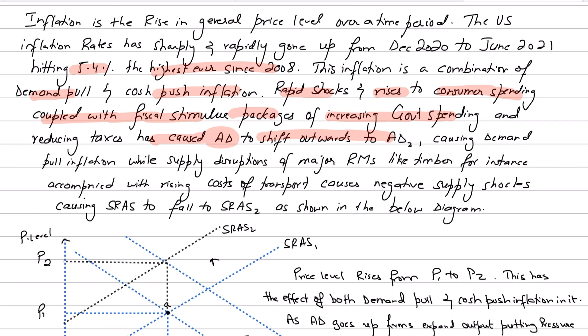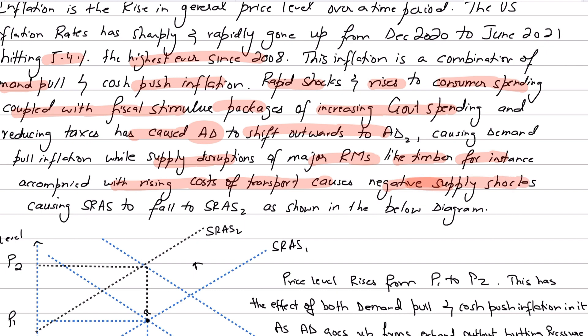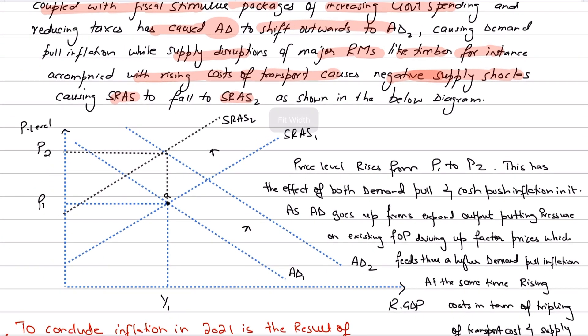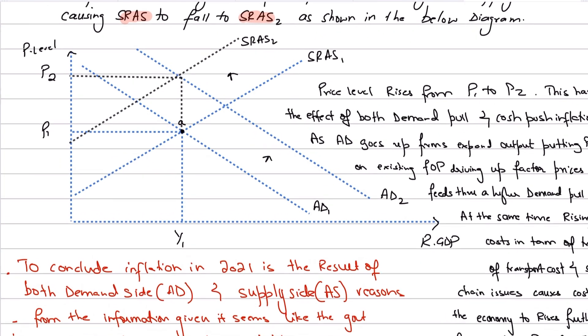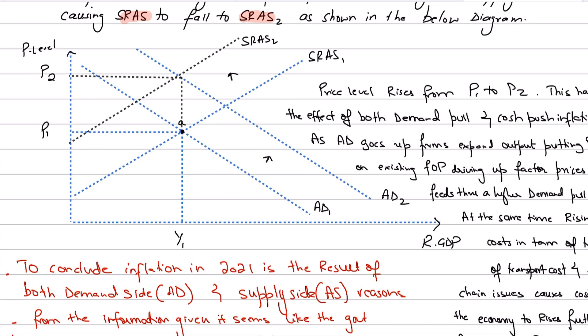At the same time, mention supply-side reasons such as supply disruptions of major raw materials like timber, accompanied by rising transport costs. The cost of shipping goods from China to the US has tripled over 12 months — a tremendous rise in cost of production — which feeds through the economy as higher cost-push inflation, causing negative supply shocks and SRAS to fall to SRAS2. Then say this has been diagrammatically represented in the diagram below, and explain the diagram's analysis on the side.